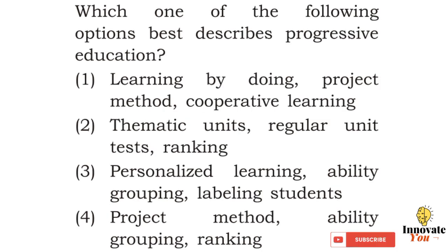Question 4. Which one of the following options best describes progressive education? Option 1: Learning by doing, project method, cooperative learning. Option 2: Thematic units, regular unit tests, ranking. Option 3: Personalized learning, ability grouping, labeling students. Option 4: Project method, ability grouping, ranking.